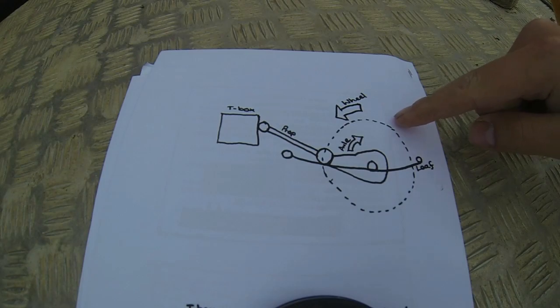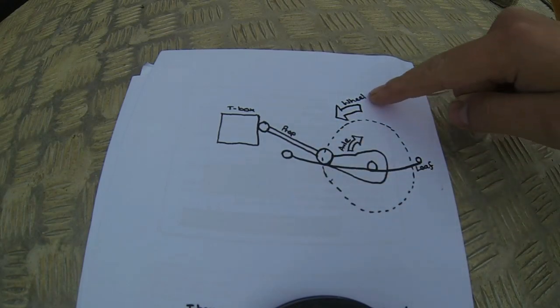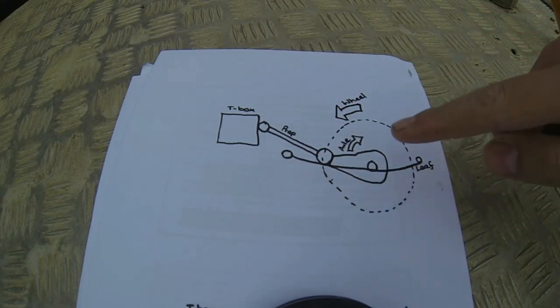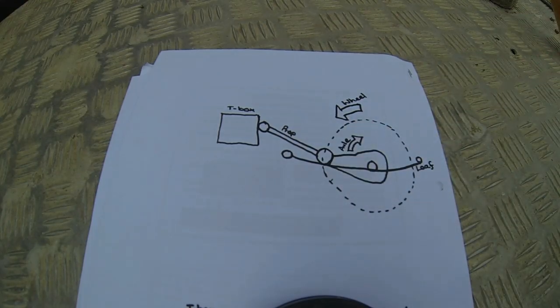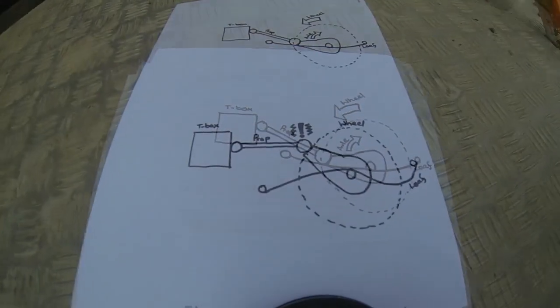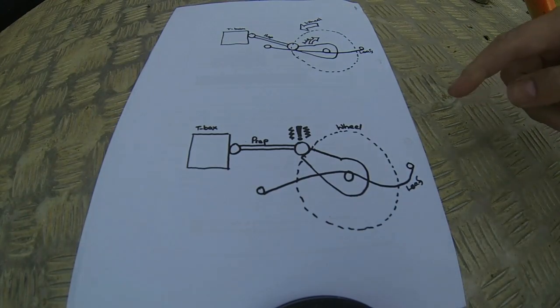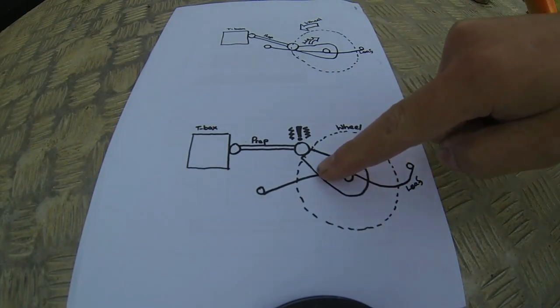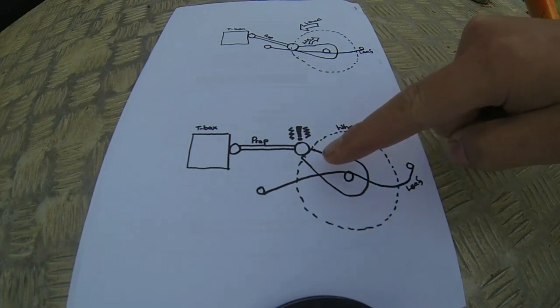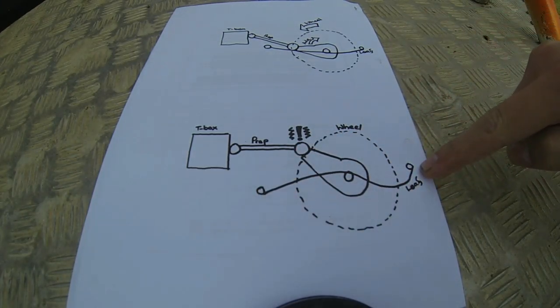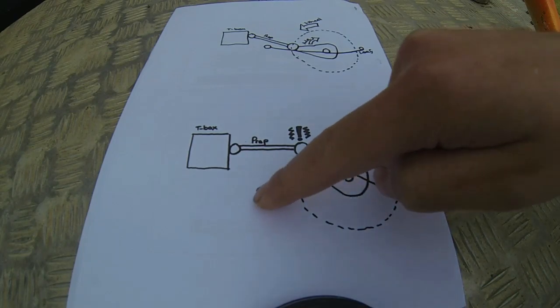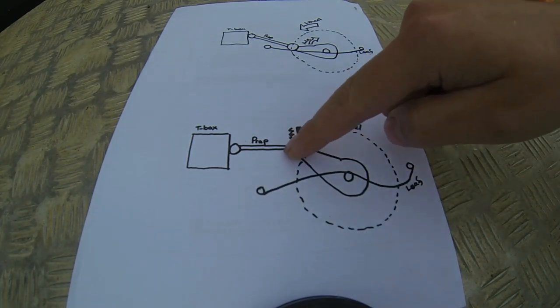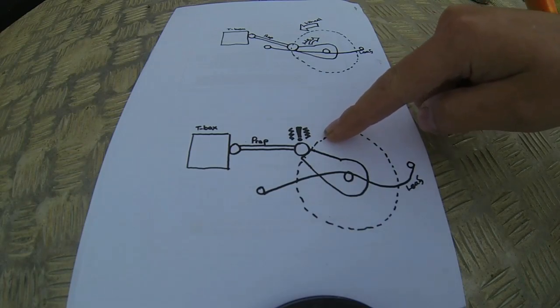What happens is when the wheel wants to turn this way, the reactionary force causes the axle to want to rotate this way. When that happens, the diff carrier wants to rotate, which causes the leaf springs to bend into this sort of S shape, and this UJ can bind quite badly.